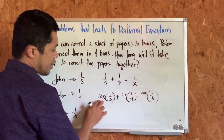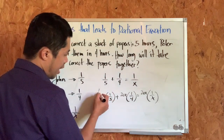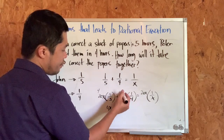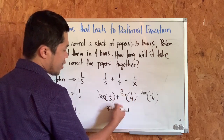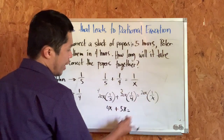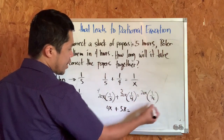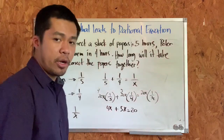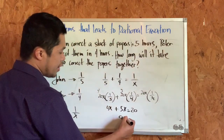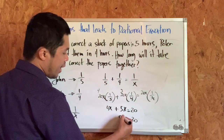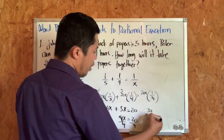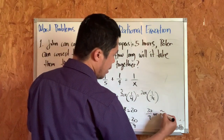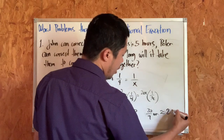Simplifying: 20x times 1/5 — cancel 20 and 5 — gives 4x. Plus 20x times 1/4 — cancel 20 and 4 — gives 5x. Equals 20x times 1/x — cancel x — gives 20. So we have 4x plus 5x equals 20, which is 9x equals 20. Dividing both sides by 9, x equals 20/9, or approximately 2.22 hours.